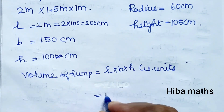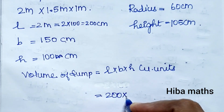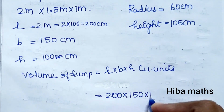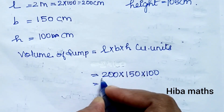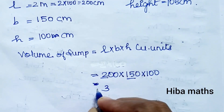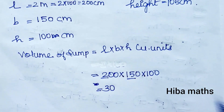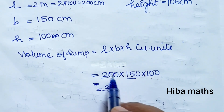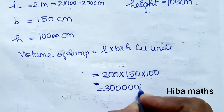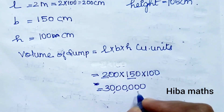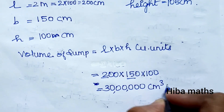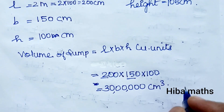Substituting values: L = 200cm, B = 150cm, H = 100cm. So 200 × 150 × 100 = 30,00,000 cubic centimetres. This is the volume of the sump.